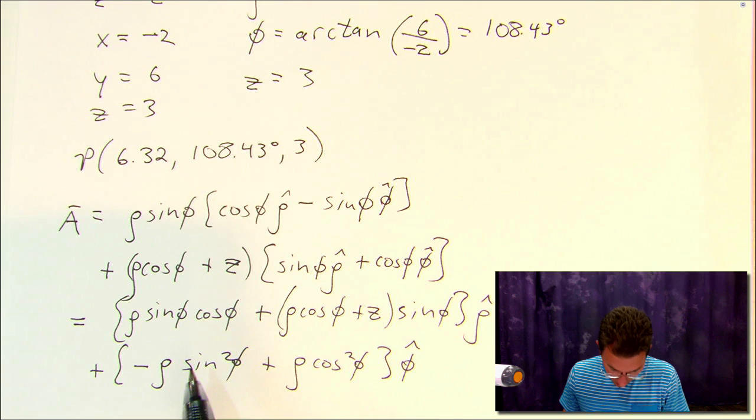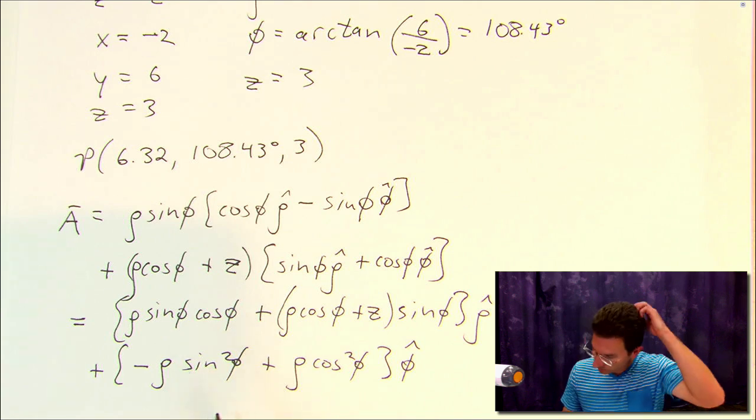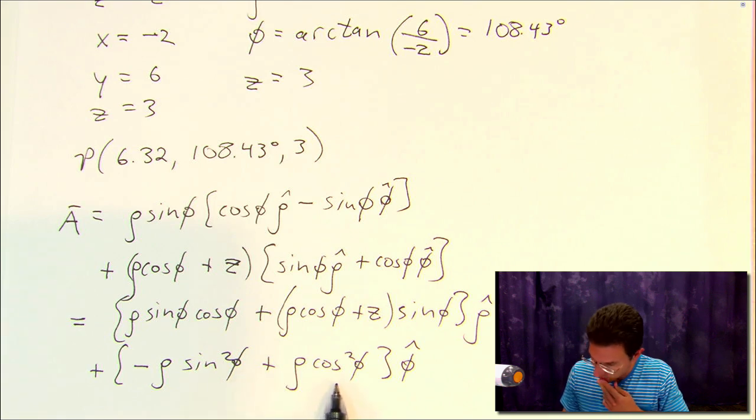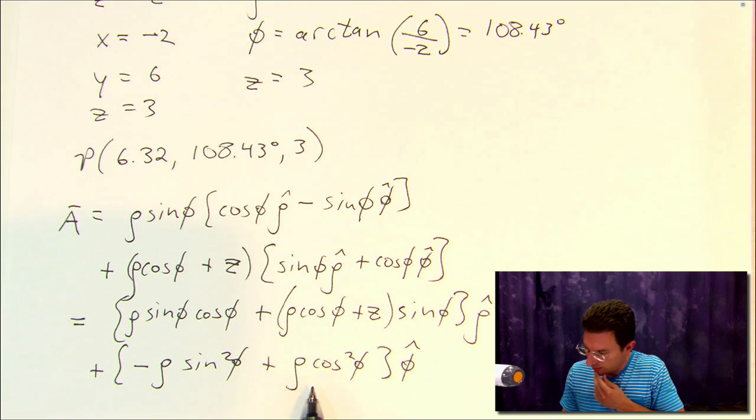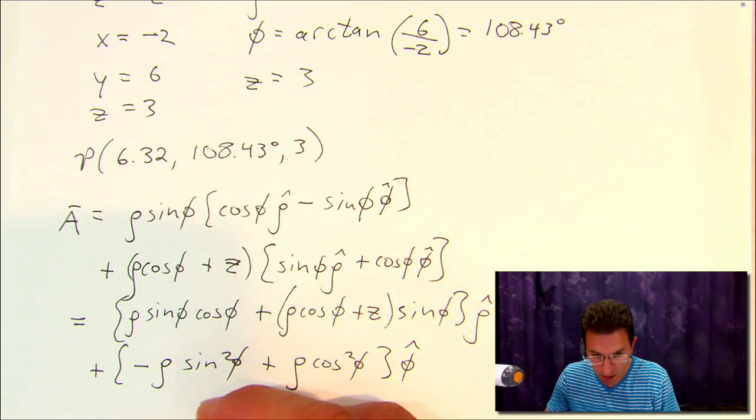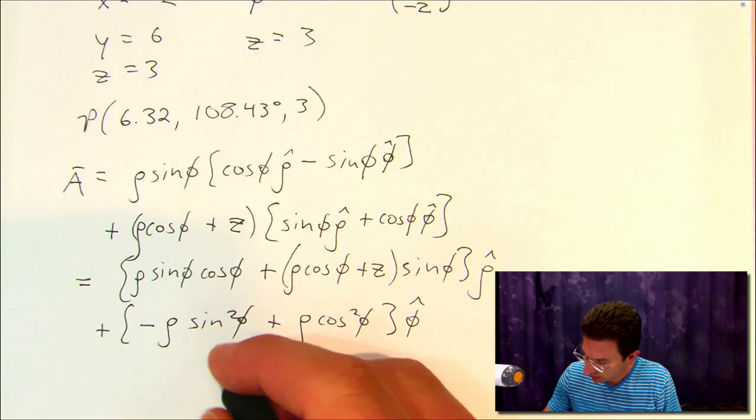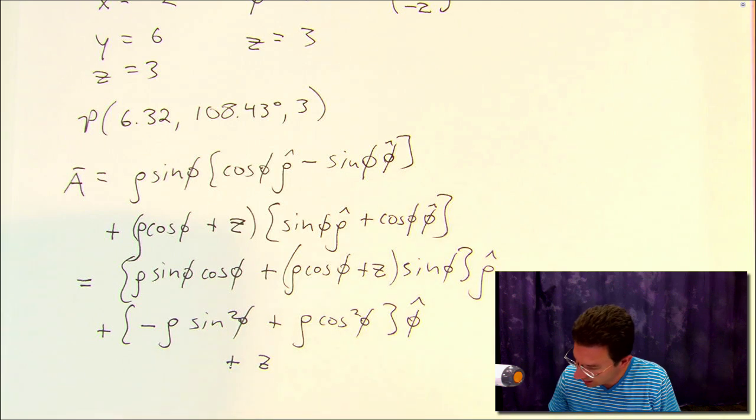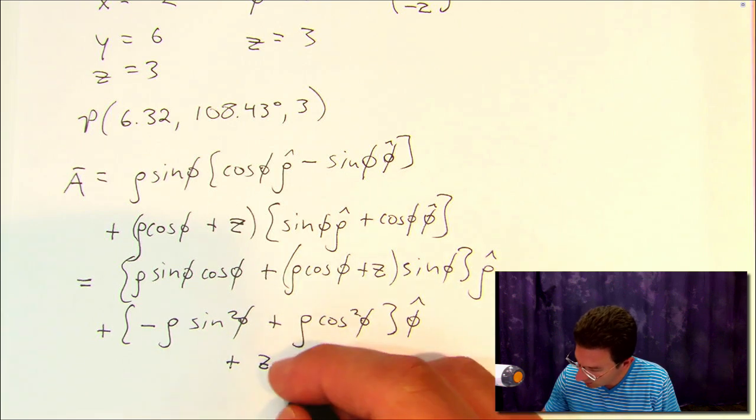And down here, you end up with minus ρ sin φ plus ρ cos φ, plus one other term that I missed here, and then I'll add this in, plus z times cos φ here in the φ̂ direction.